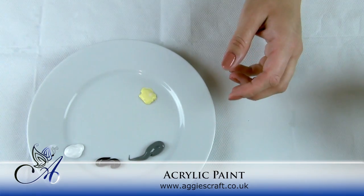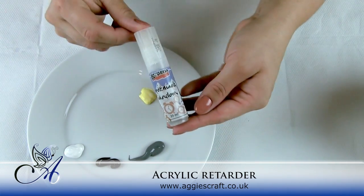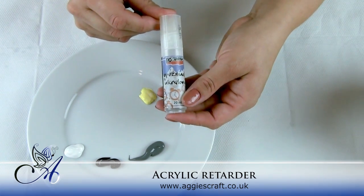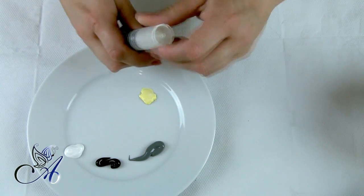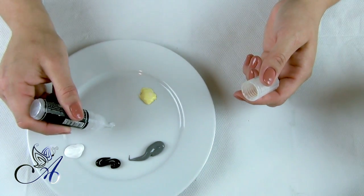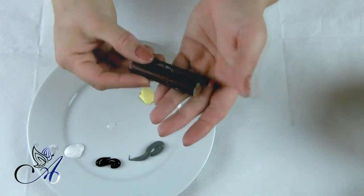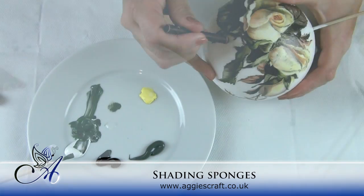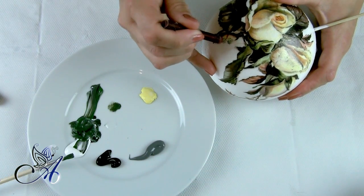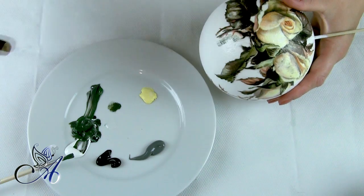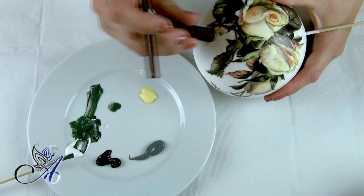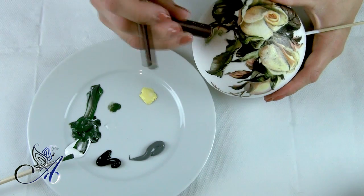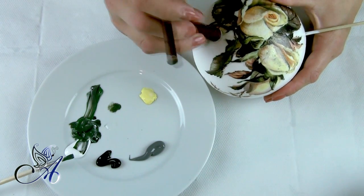When everything is dry, we can start shading around images. I'm using acrylic retarder and shading sponges. Make sure not to add too much retarder to your paint, otherwise your work will be drying for days.